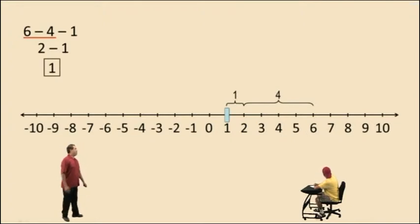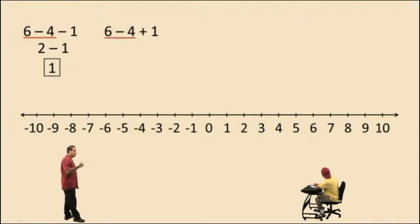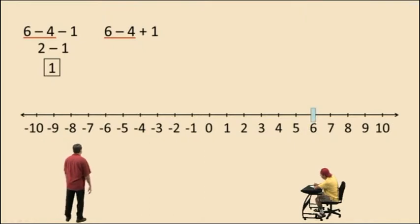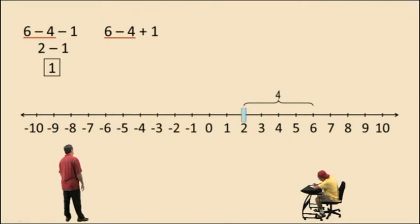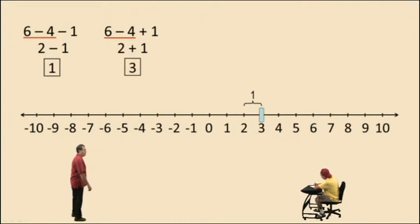Now let's try this problem: 6 subtract 4 plus 1. Remember, we have to perform additions and subtractions working left to right, whichever comes first. Since the subtraction came first, we do that: 6 subtract 4 is 2. Now we add 1 — we move to the right 1 unit — and that gives us 3.